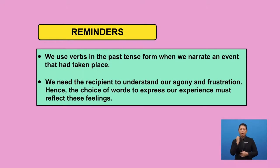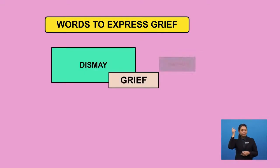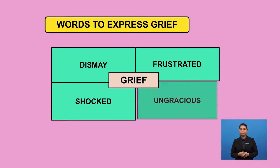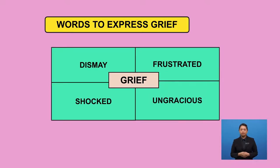The next pointer is the choice of our words. We need the recipient to understand our agony and frustration. The choice of words to express our experience must reflect these feelings. Here are some words I have in mind: dismay, frustrated, shocked, frightening, sad, turmoil, agony, rude, ungracious, revolting. Using a circle map is definitely a practical way to prepare ourselves before we start writing.